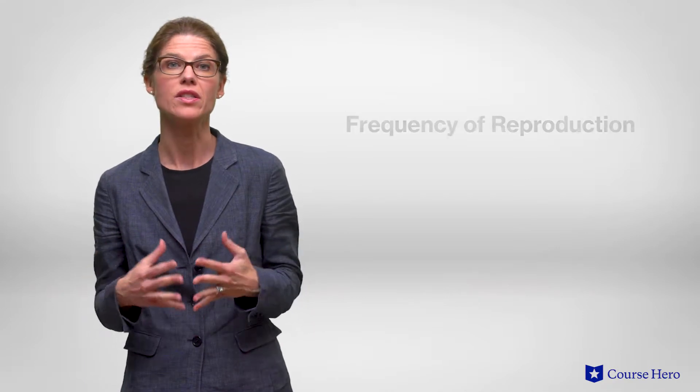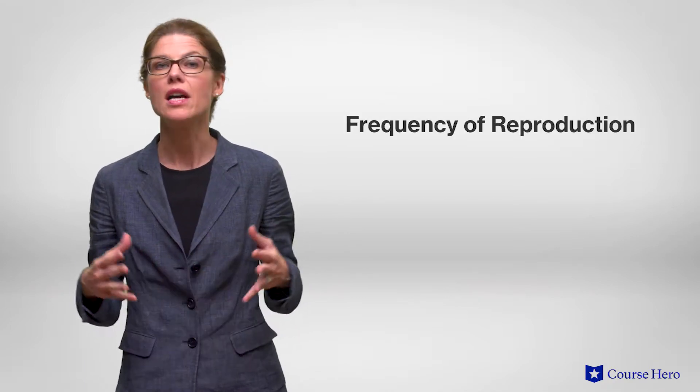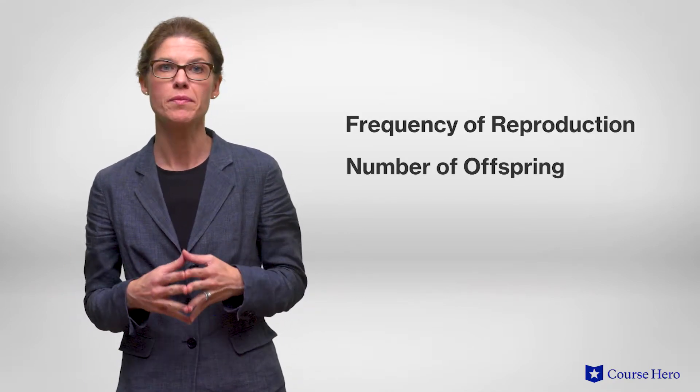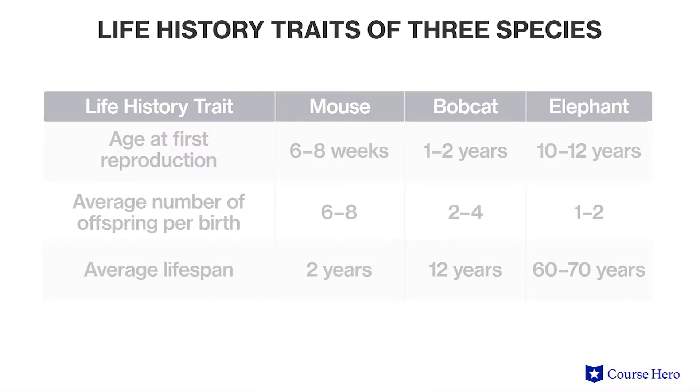Natural selection favors traits that improve an organism's chances of survival and reproductive success. In every species there are trade-offs between survival and traits such as frequency of reproduction and number of offspring produced. The traits that affect an organism's schedule of reproduction and survival make up its life history.